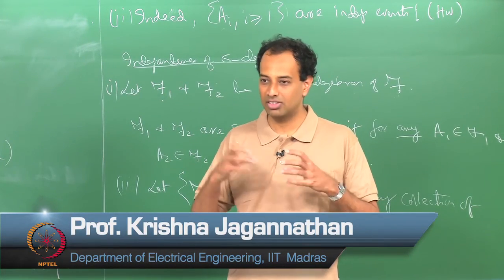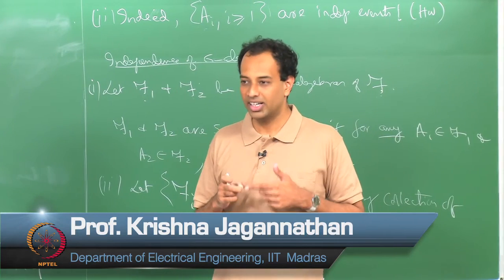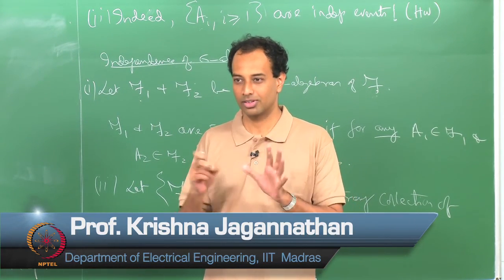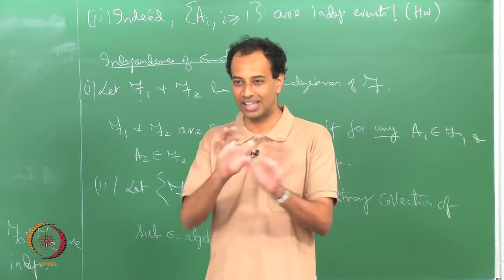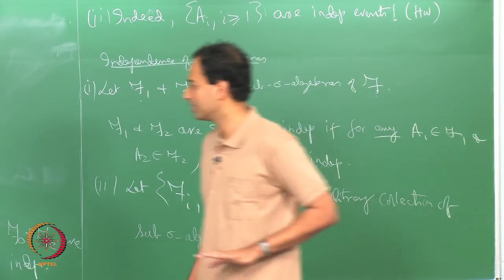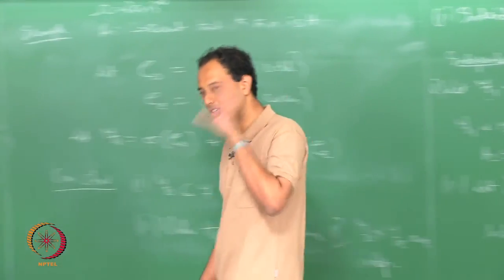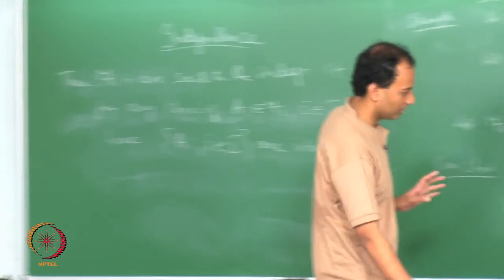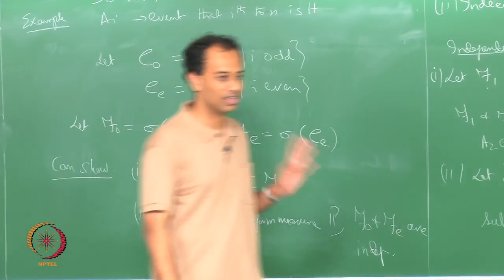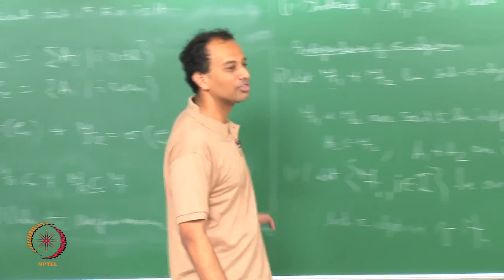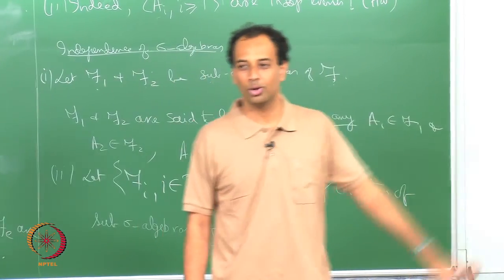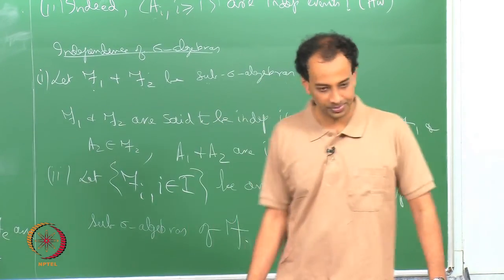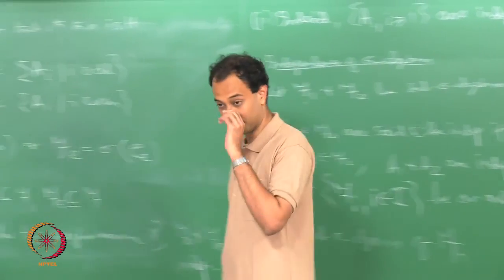A collection of sets closed under finite intersections is called a pi system. Independence under a pi system is enough to show independence of the sigma algebras generated by those pi systems. I will state this properly as a theorem when we move on to random variables. For now, just note that you do not have to pull out all sorts of complicated Borel sets to verify independence — it is enough to verify on a generating pi system.